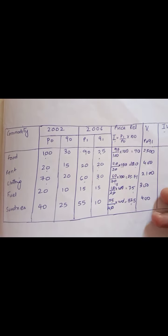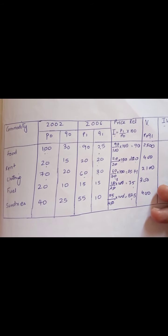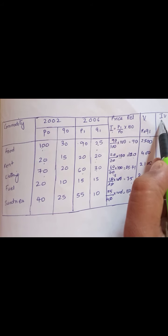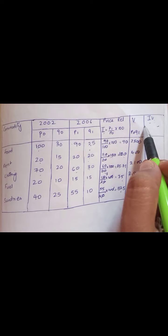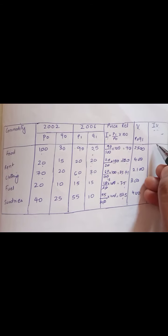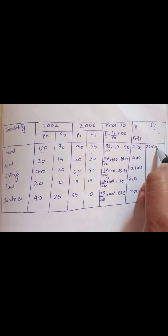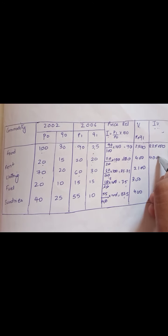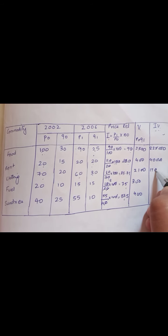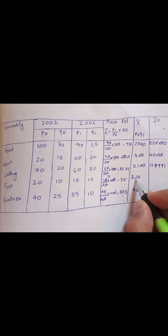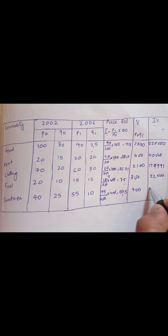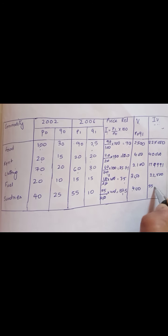Now what we have to find is our index. The formula to find weighted average of price relative is product of i into V, the product of price relative into value. So i into V: 90 into 2500 will give you 225,000. This will give you 40,000. This will give you 179,991. 300 into 75 will give you 22,500. 400 into 137.5 will give you 55,000.